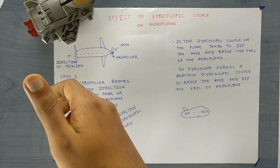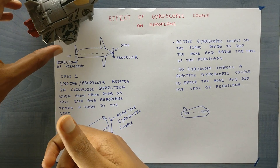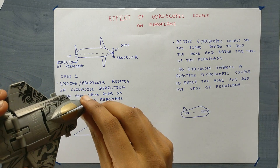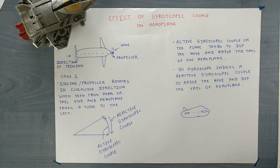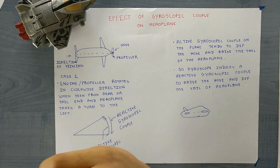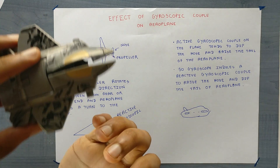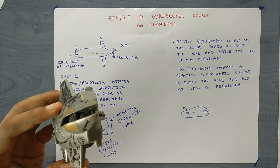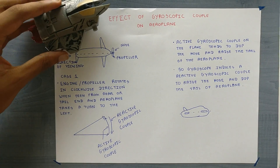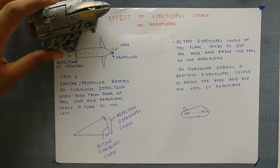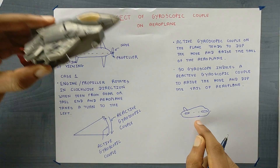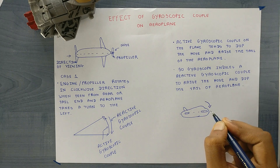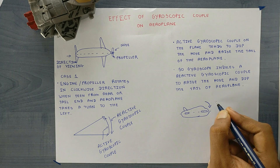As the active gyroscopic couple is in this direction, according to the right hand thumb rule, the gyroscopic effect tends to raise the tail of the aeroplane and dip the nose of the aeroplane. And the reactive gyroscopic couple, in this direction, will tend to raise the nose and dip the tail of the aeroplane. I have drawn the side view of the aeroplane here, showing the result of active gyroscopic couple and the effect of the reactive gyroscopic couple.